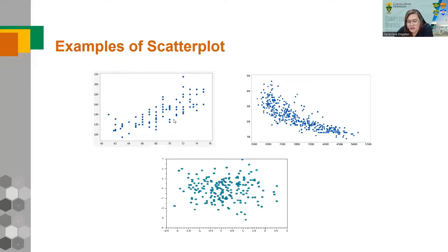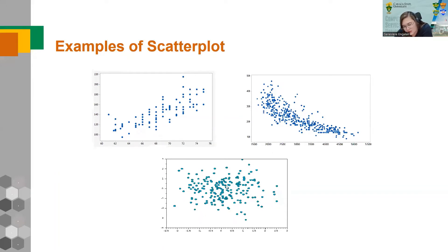We can first look at a scatter plot to see the trend in the data. For example, if the points are going upward, it is increasing — as x increases, y also increases. If the points go downward, it is decreasing — as x increases, y decreases. If there is no clear pattern, the data appears scattered with no linear trend.